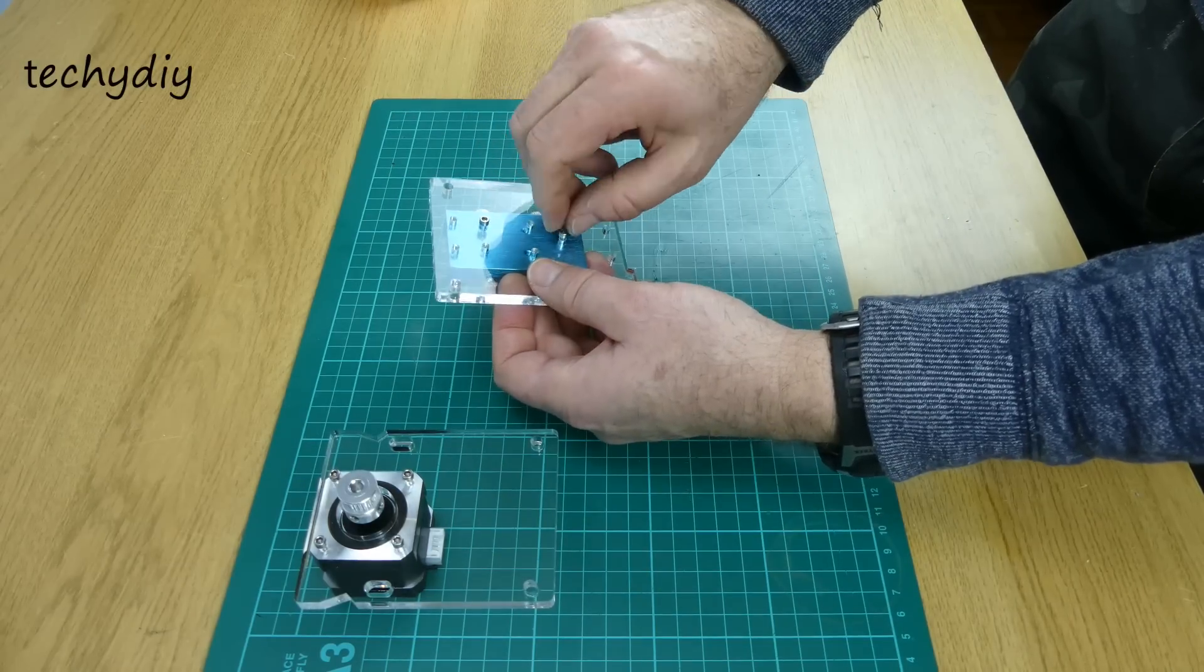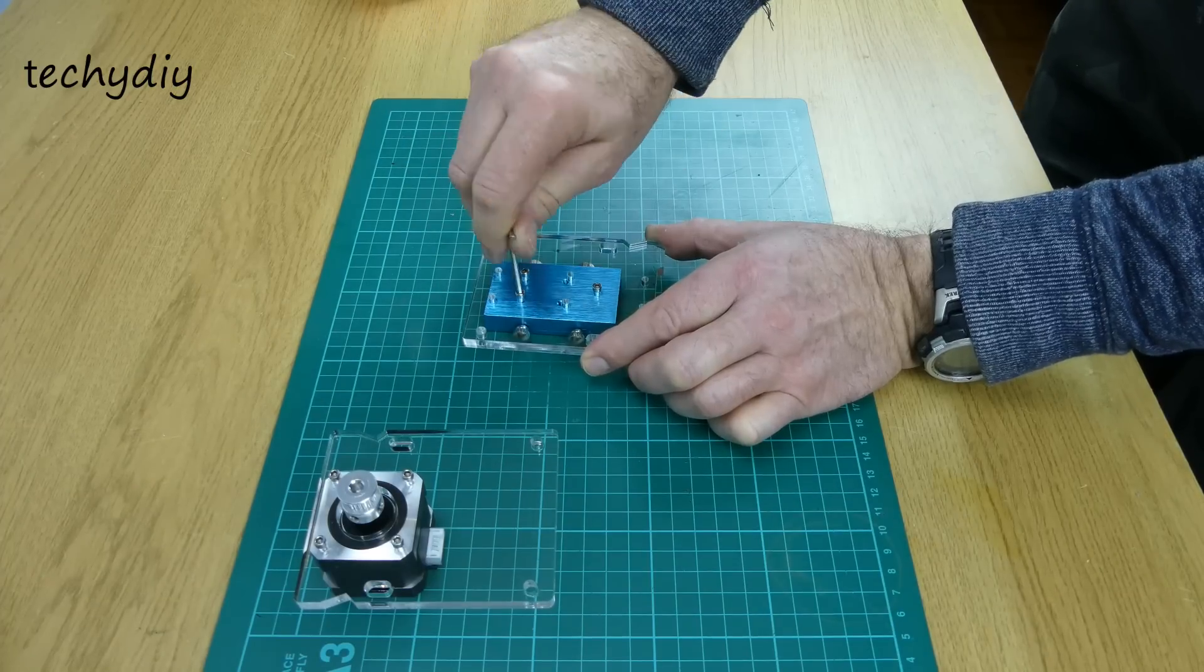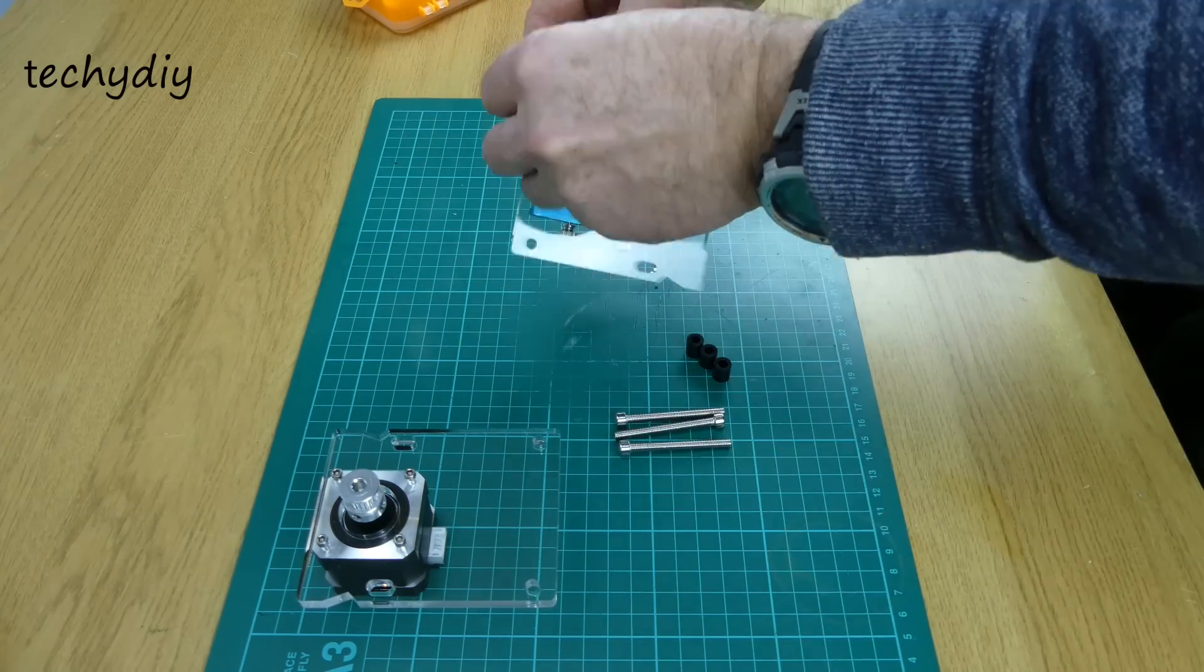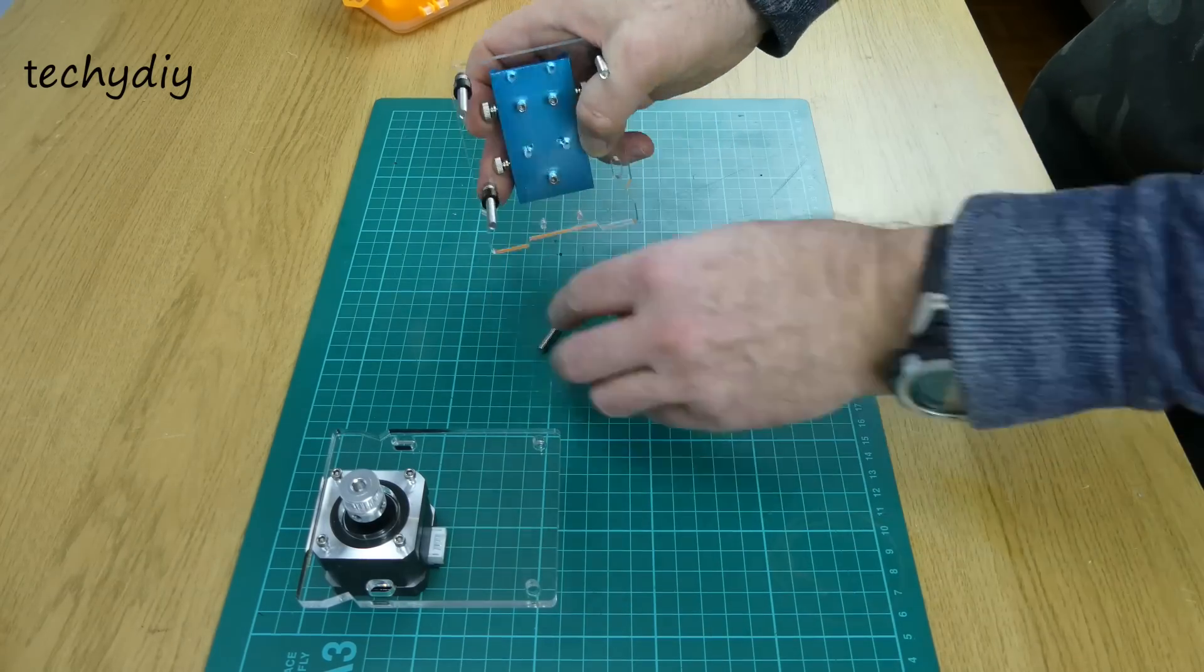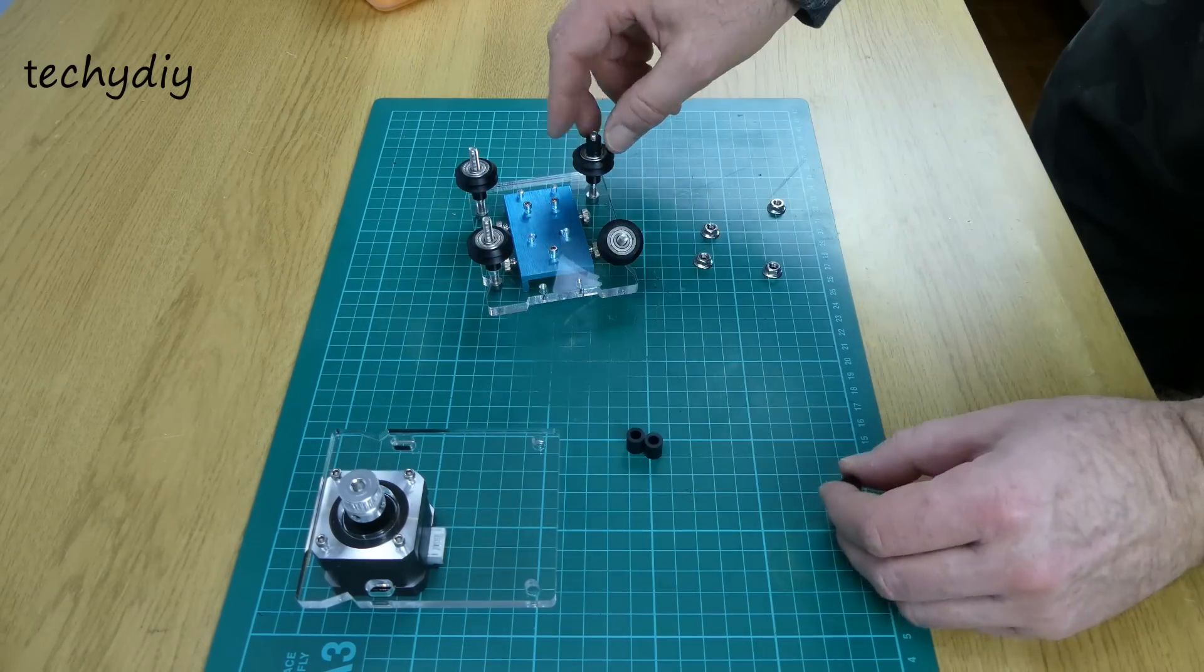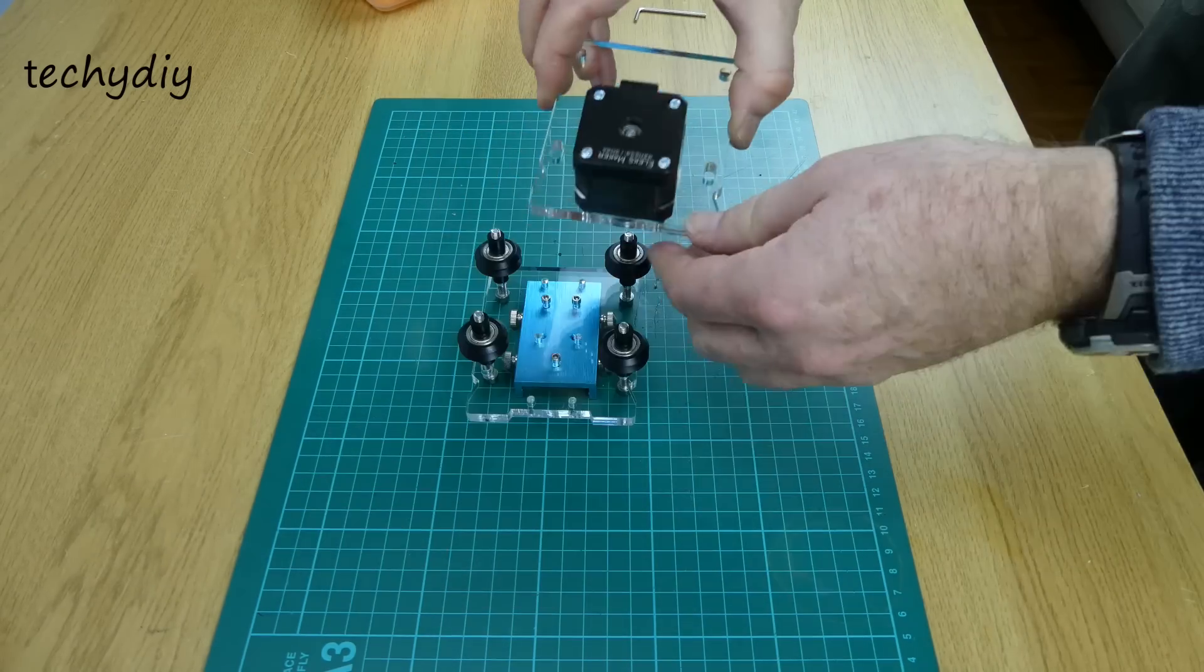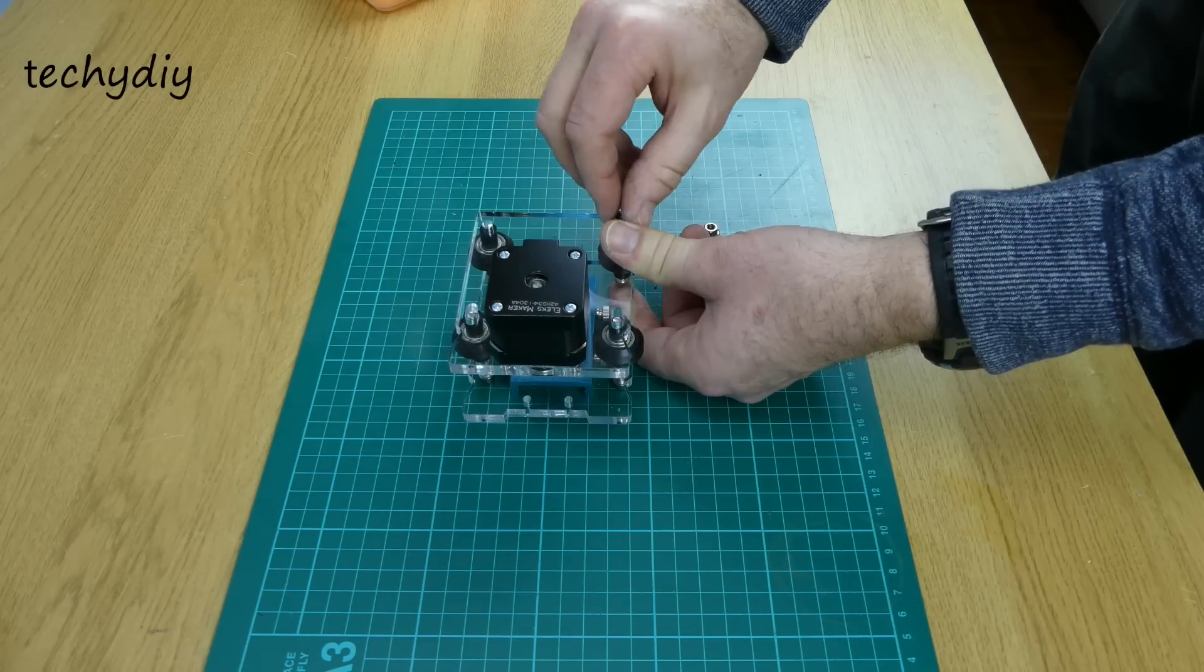And then the laser mount was screwed to another acrylic plate. Screws and spacers were fitted to the acrylic plate, followed by the wheels and another set of spacers. The two acrylic plates were fitted together and secured with flange nuts.